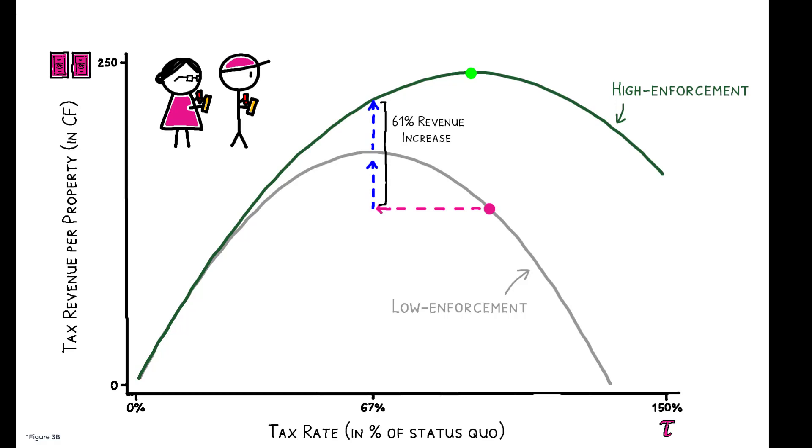If the government jointly optimized, by increasing enforcement, and prospectively choosing its tax rate to correspond to this new RMTR, revenue would be even higher.